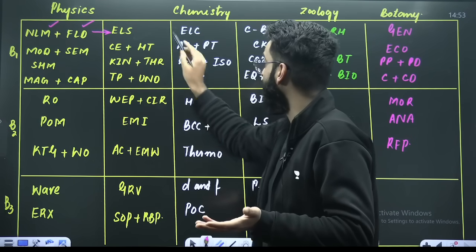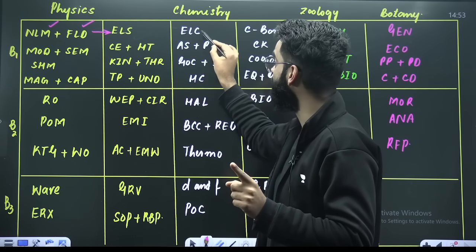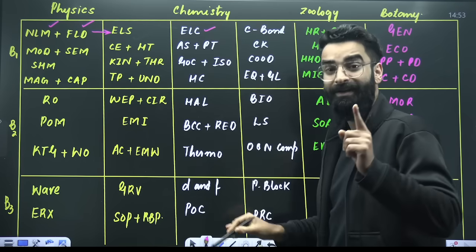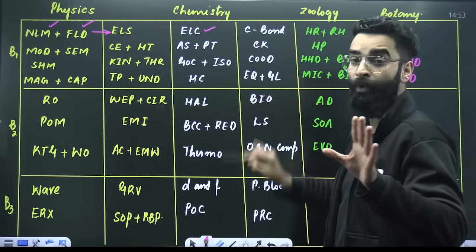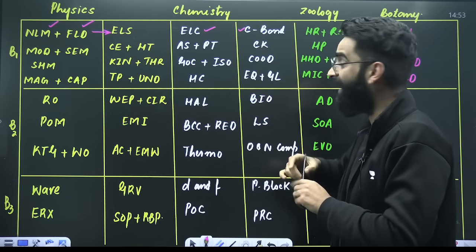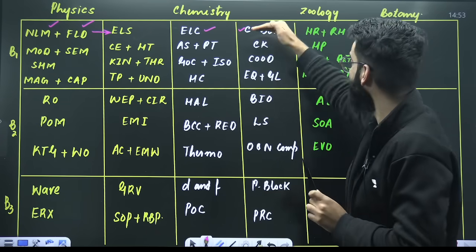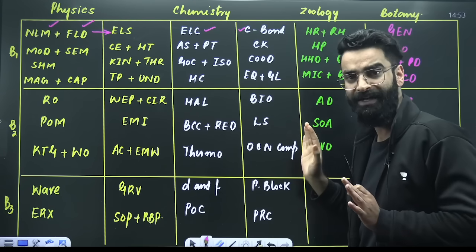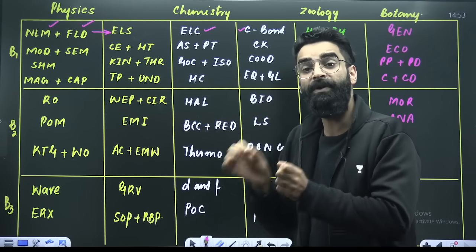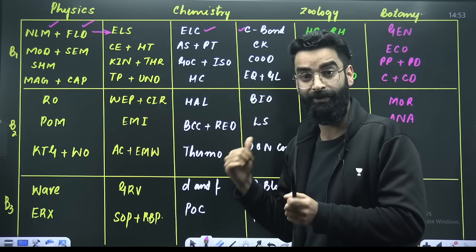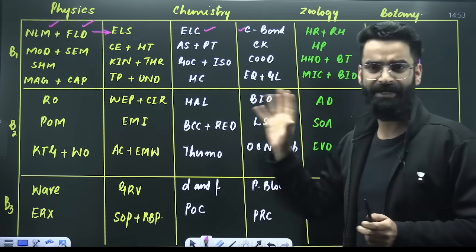On the same day, my dear students, on the same day you will shift to chemistry as well. In chemistry, first you will do the theory of electrochemistry. Once you are done with the theory of electrochemistry, you will move into chemical bonding. And once you are done with the theory of these two chapters, then you will solve the problems of electrochemistry and chemical bonding. Similarly on the same day you will go for zoology and botany as well. All these abbreviations — all these short forms which I have mentioned over here — you can get their full forms in the description box of this particular video.